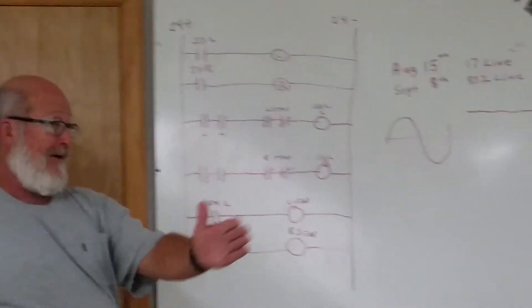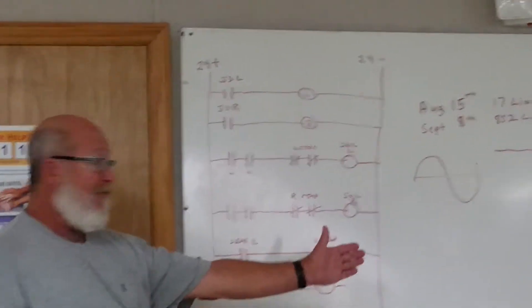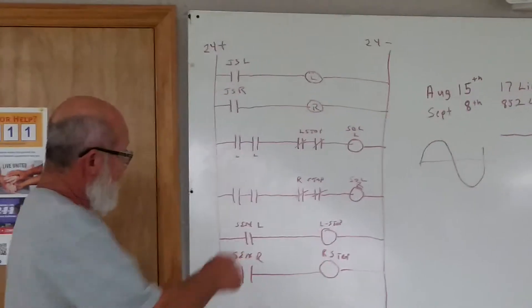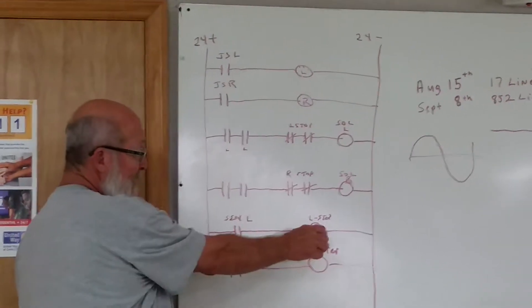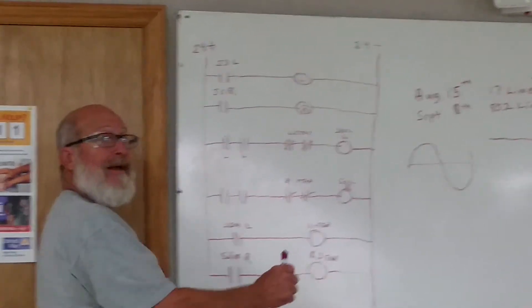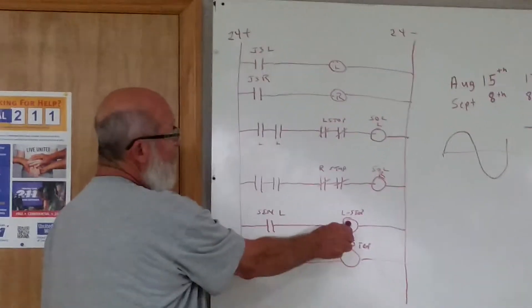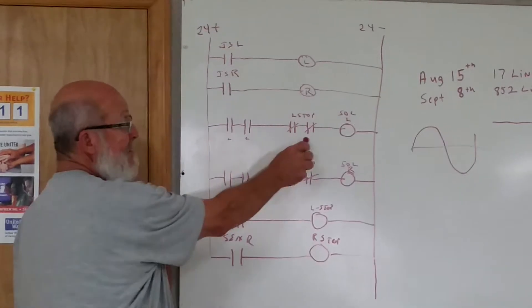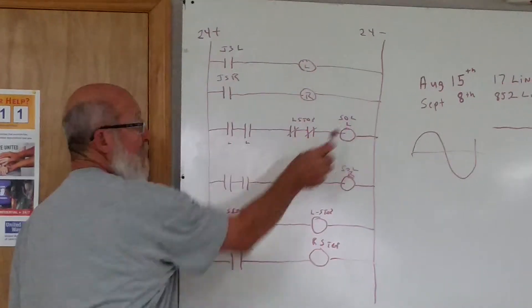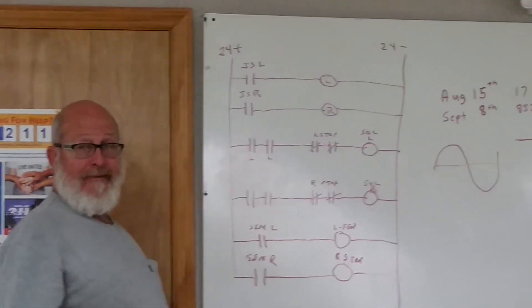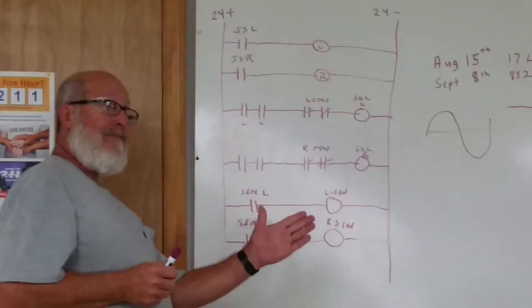The gun will start moving to the left. When the gun comes all the way over to the sensor, the sensor then will close and it will energize the left stop relay. This is out there on the gun space. When it energizes the stop relay, it opens these two contacts and drops the solenoid out. So the gun stops.